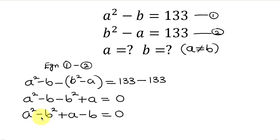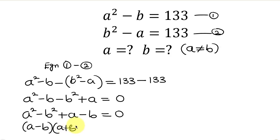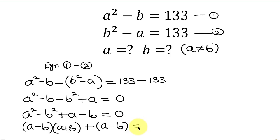Looking at the first two terms, we notice that we have a difference of two squares. The difference of two squares can be expressed as a minus b times a plus b. So we write a minus b times a plus b, plus the remaining term which is a minus b in a bracket, all equal to 0.